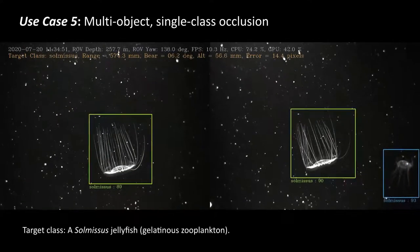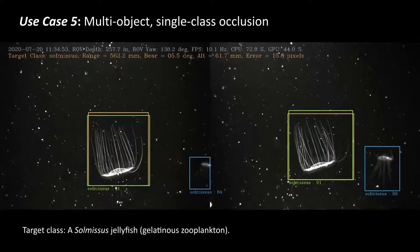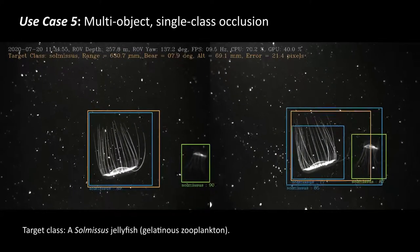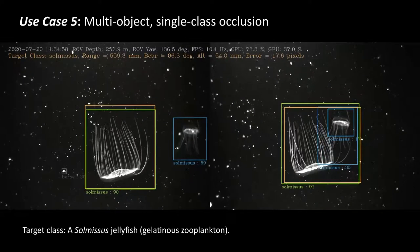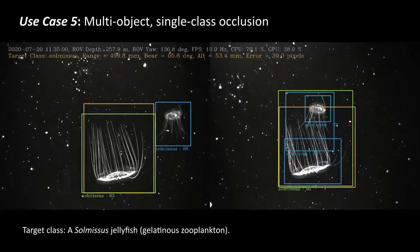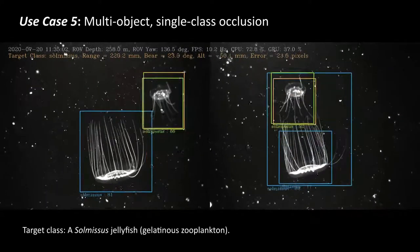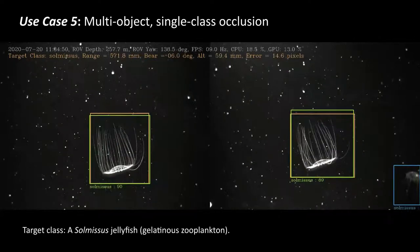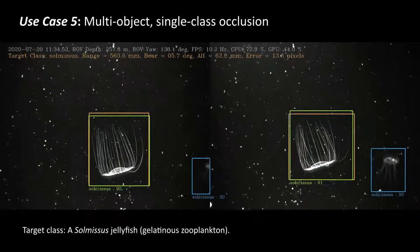And finally, for use case five, we have a multi-object single class occlusion, where you can see two Solmissus jellyfish swimming towards each other, and tracking has been transferred to the second jellyfish. Additional work is required to address this limitation found in the ML tracking algorithm.